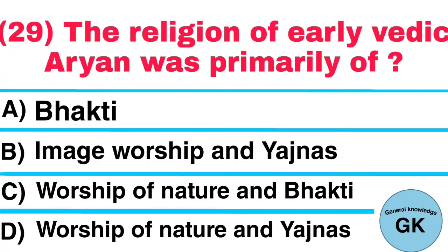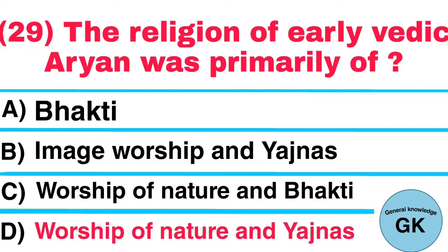Question number 29. The religion of early Vedic Aryans was primarily of: A. Bhakti, B. Image worship and yajnas, C. Worship of nature and Bhakti, D. Worship of nature and yajnas. Answer: Worship of nature and yajnas.